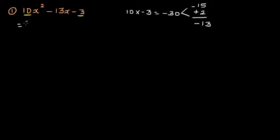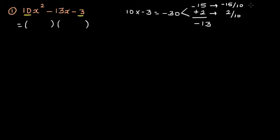The next step is where you write directly the two factors. There are different ways to factorize, and for some students it can be a bit daunting. With this method you can directly get the factors, but you have to divide both factors by the coefficient of x squared. So divide negative 15 by 10 and also 2 by 10, then simplify. Dividing by 5 gives you negative 3 over 2.